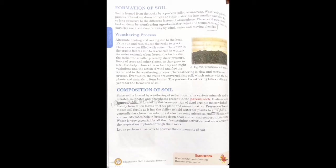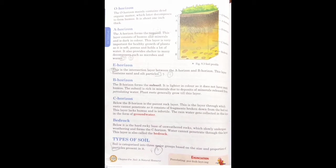The next topic is soil profile. A vertical section of soil from the ground surface to the parent rock is called a soil profile. The different layers of soil within the profile are called horizons.